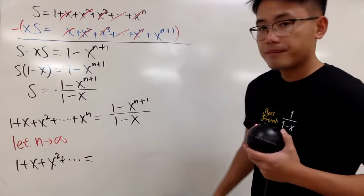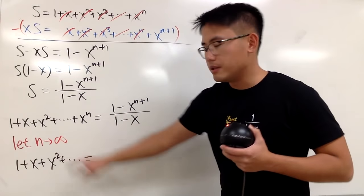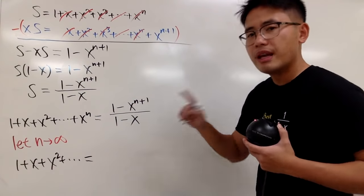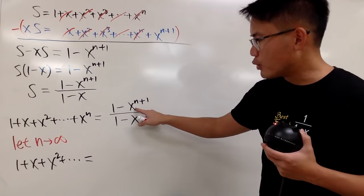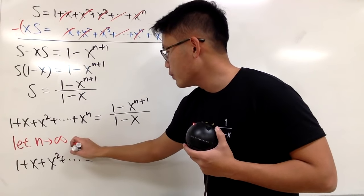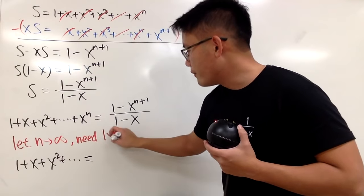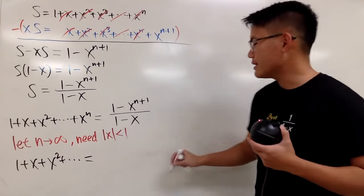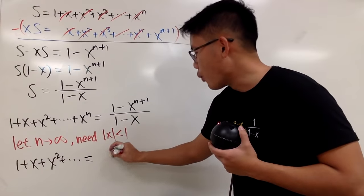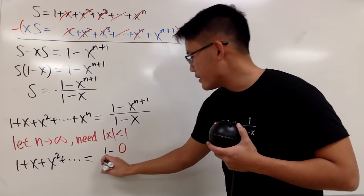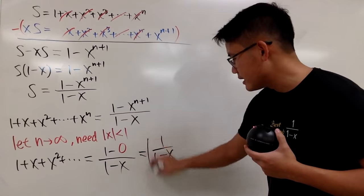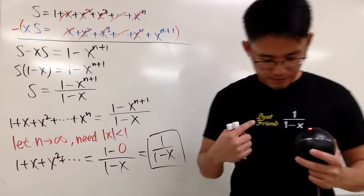Well, if you have n goes to infinity, put the n right here. x to the infinity plus 1 is like x to the infinity's power. This only makes sense if the absolute value of x is less than 1. So when you take the limit right here, you also have to make sure we need the absolute value of x to be less than 1 so that this part will be approaching 0. And we will end up this on the left-hand side equal to 1 minus 0 over 1 minus x. Of course, this is nothing but just 1 over 1 minus x, like this. Of course, this right here is the best friend.